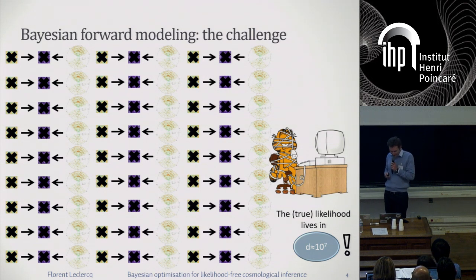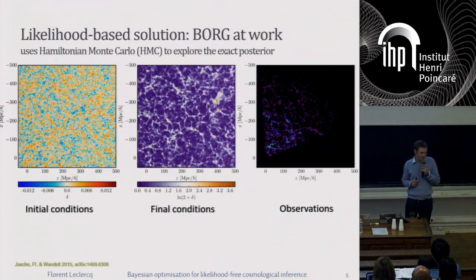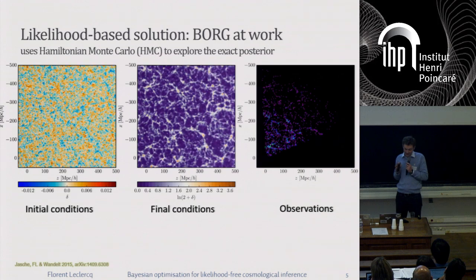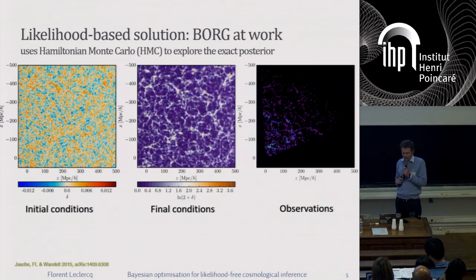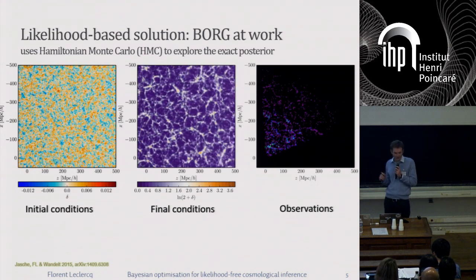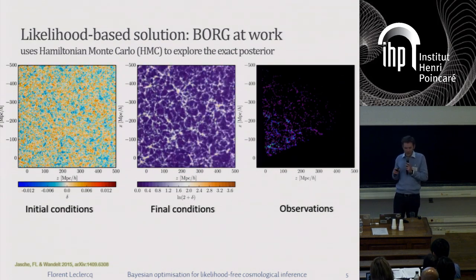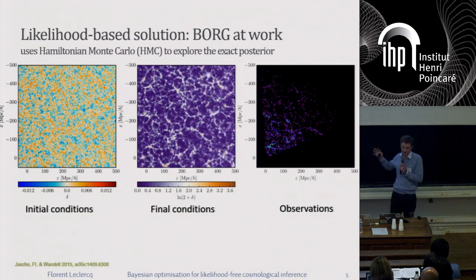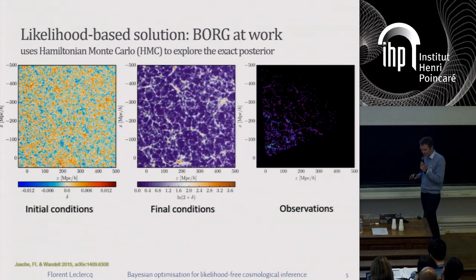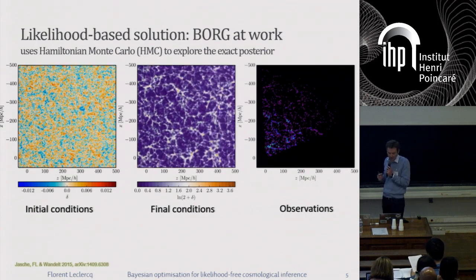One way forward is to simplify the physics. This is an approach I've been working on during my PhD with Ben and over the last few years with collaborators. We have what I believe is a really beautiful likelihood-based solution, which we call BORG — Bayesian Origin Reconstruction from Galaxies — which simplifies the physics a little bit, and uses a much more clever statistical method. This is Hamiltonian Monte Carlo, which allows us to sample the posterior — pretty much the only known method to sample a very high-dimensional posterior.